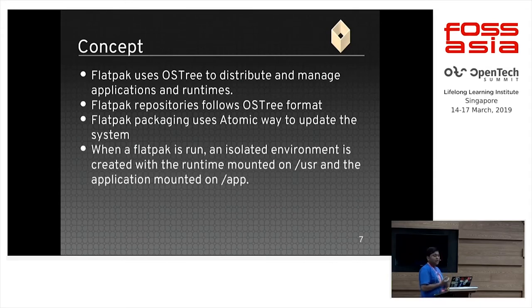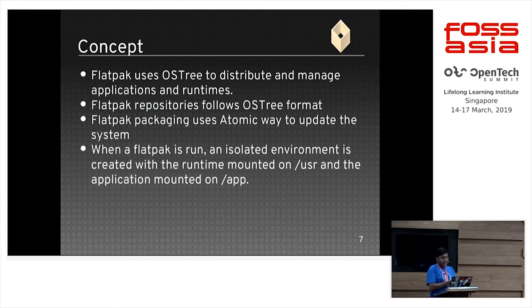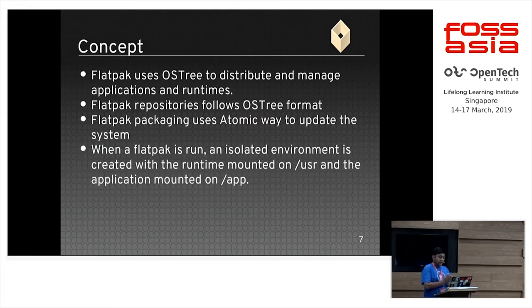When a Flatpak is run, an isolated environment is created where the runtime is mounted on /usr and the applications are mounted on /app. In an OSTree formatted system, you get only two mount points: /usr and /app. Every other mount point is read-only on the OSTree system. On /usr, the runtimes are mounted, and on /app, the actual application is mounted. We will see this when we look at the actual example of Flatpak.